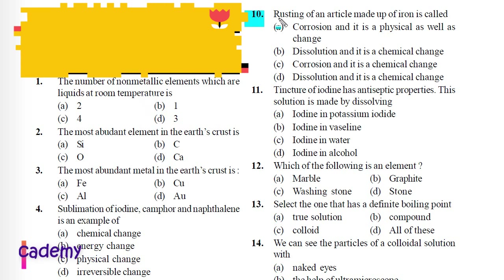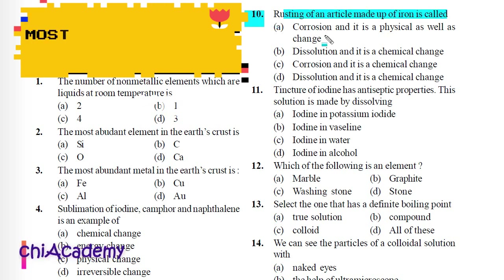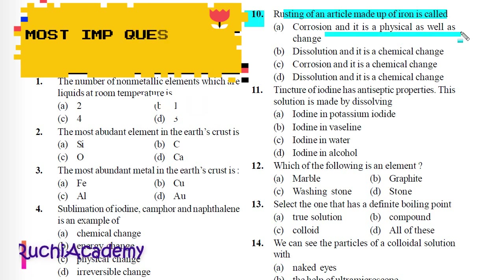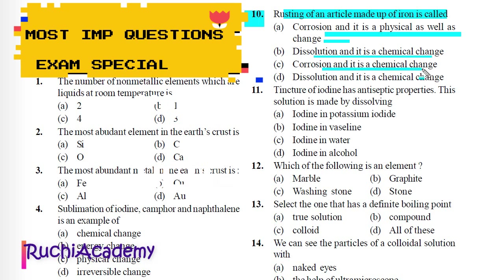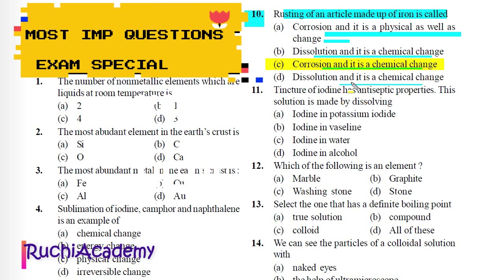Question 10: Rusting of an article made up of iron is called: A) Corrosion and it is a physical as well as chemical change, B) Dissolution and it is a chemical change, C) Corrosion and it is a chemical change, D) Dissolution and it is a chemical change. Correct answer is C. Rusting of iron is called corrosion and it is a chemical change.